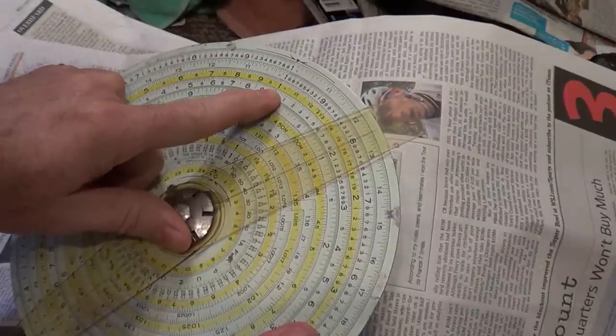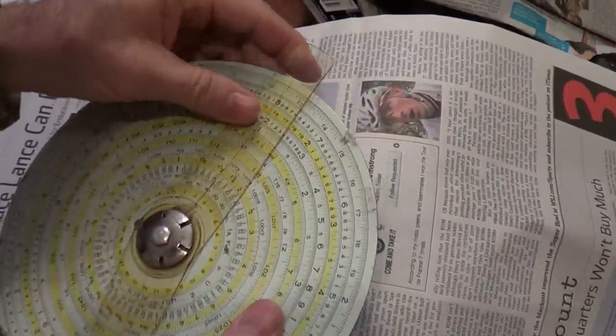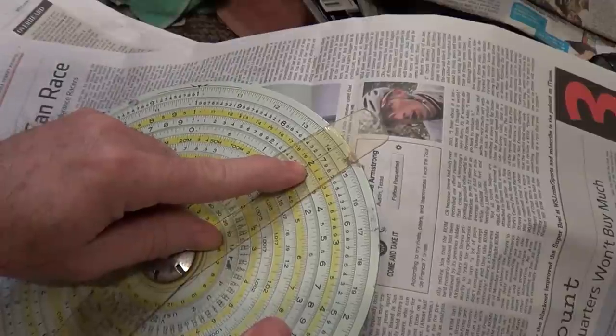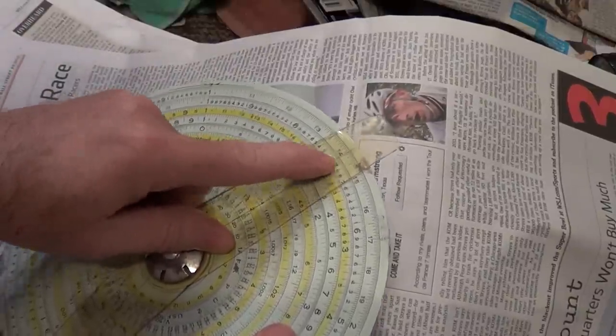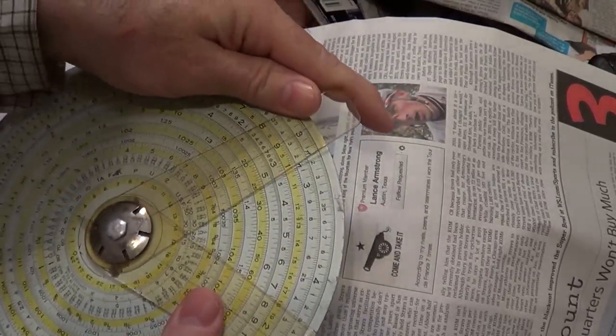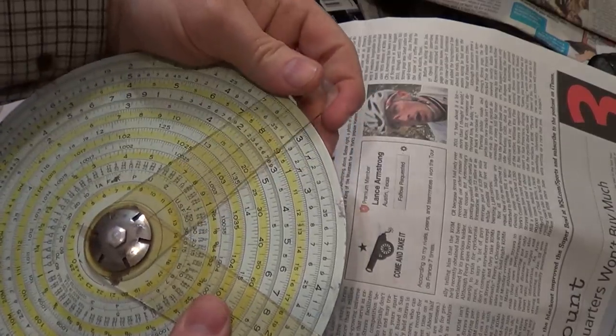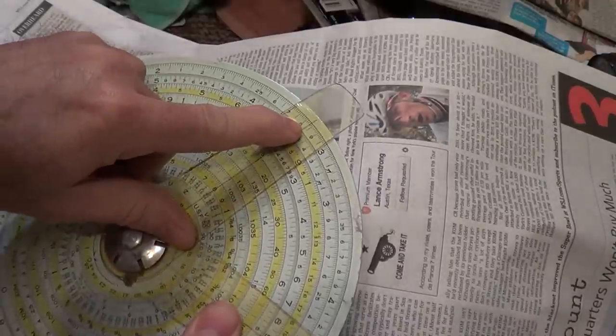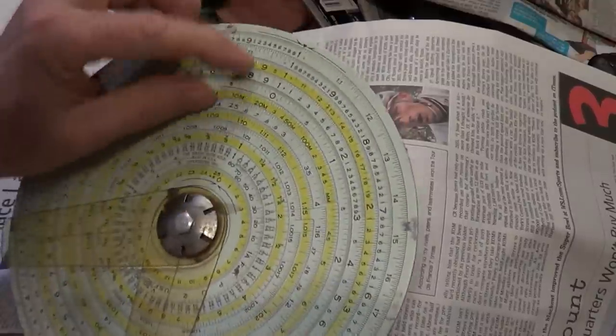The A scale here is for squaring. So if you put this on two, square root of two is 1.414, which is up here. If I put on the C scale nine, square root of nine is three. Square root of eight is 2.8, say three something.